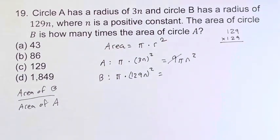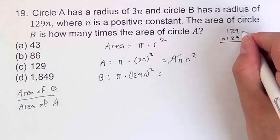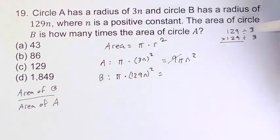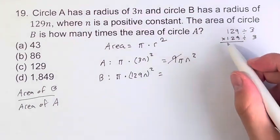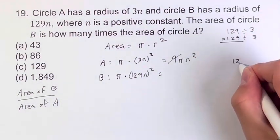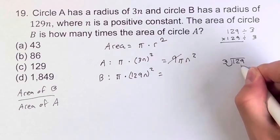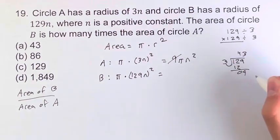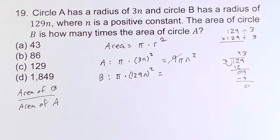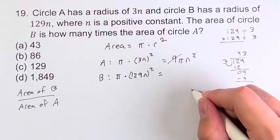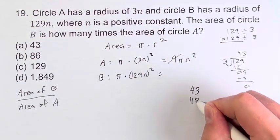129 in itself is not divisible by 9. However, we can divide by 3 twice. Dividing something by 3 twice is the same as dividing by 9. 129 divided by 3 is 43. So when we divide by 9, this multiplication is actually the same as 43 times 43.